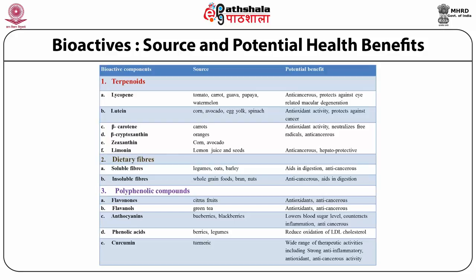Another highly nutraceutical class of compounds are the polyphenolic compounds, including flavanols, anthocyanins, and phenolic acids. Green tea is popular because of these polyphenolic compounds, which are antioxidant and therefore anti-cancerous. Anthocyanins in blueberries, blackberries, and black grapes are also anti-cancerous. Curcumin, a nutraceutical present in turmeric, has been known in Indian traditional medicine as an anti-inflammatory and antioxidant, and has now reached phase 3 clinical trials due to its nutraceutical properties.